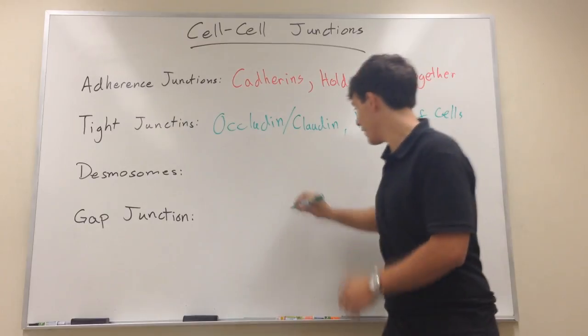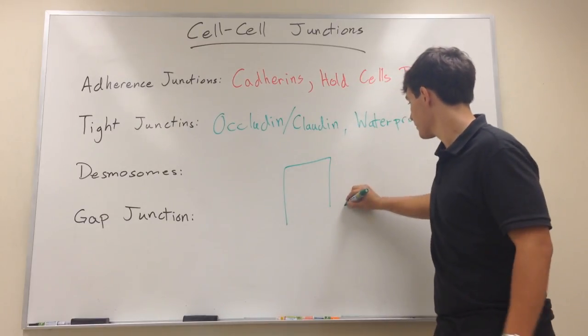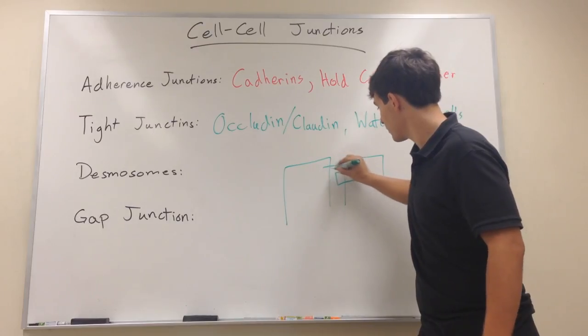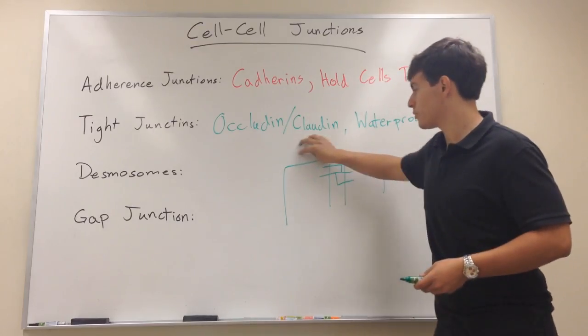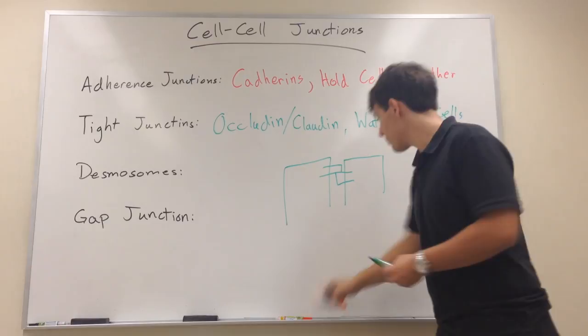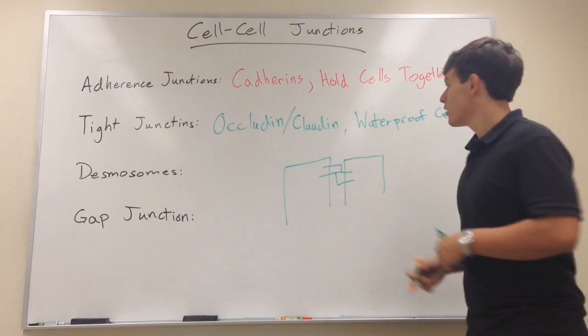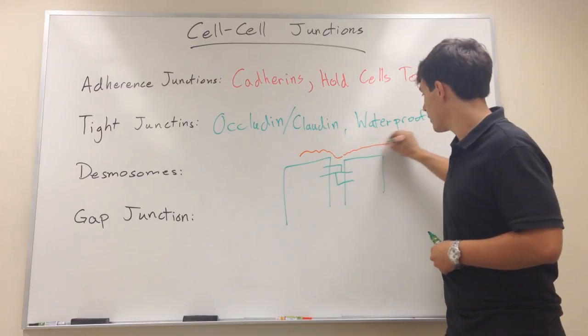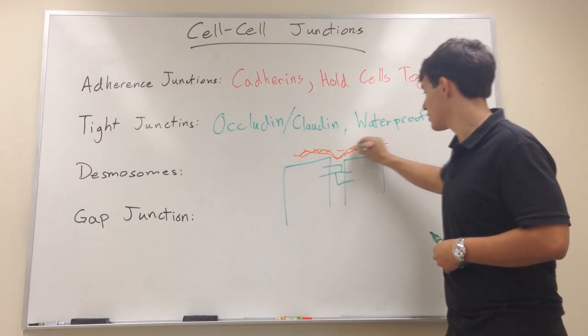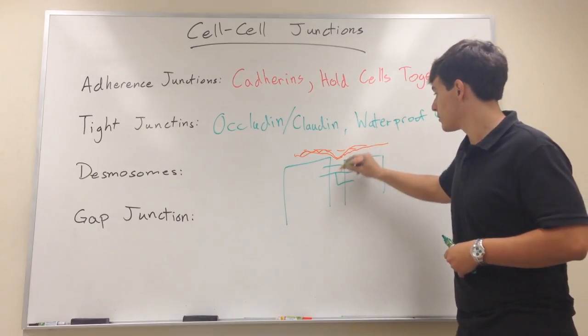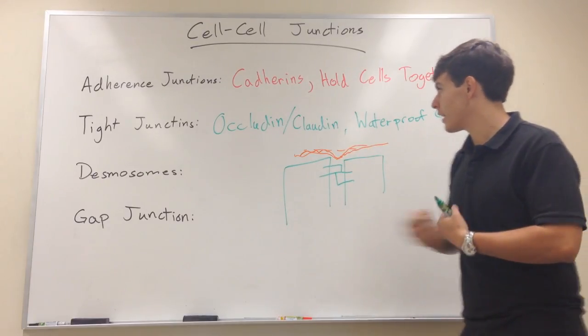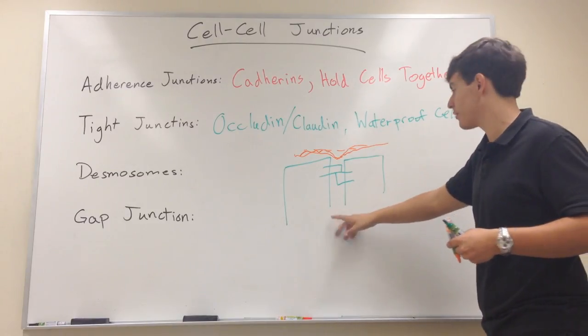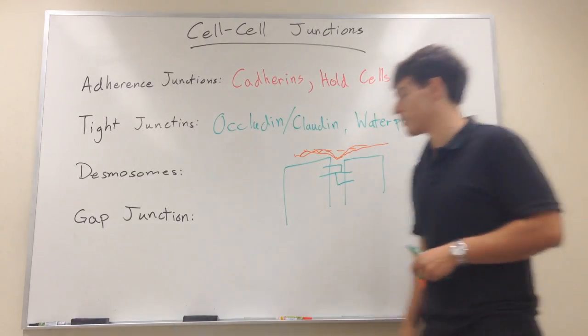And because when we have two cells together, there are certain structures right here that when solute was put above the cells, it would flow near the tight junctions but it would never get past it. And something was blocking and keeping it tight and that was tight junctions. So it waterproofs it, makes sure stuff doesn't get down in between the cells that's not supposed to be there.